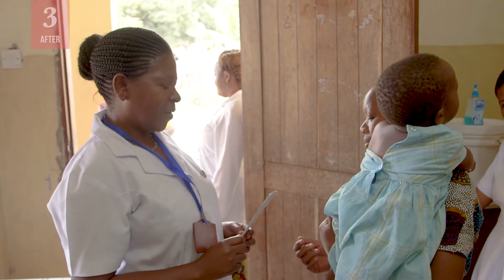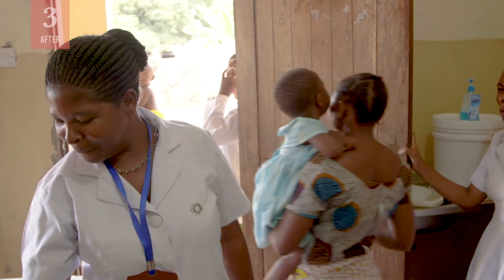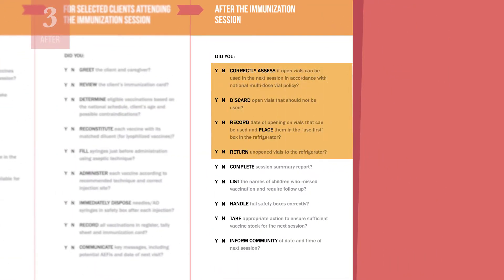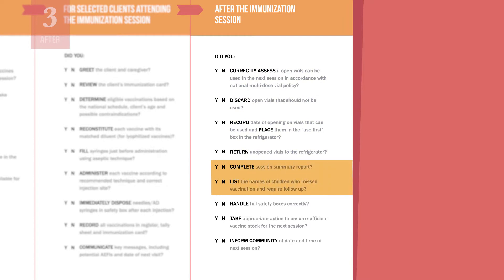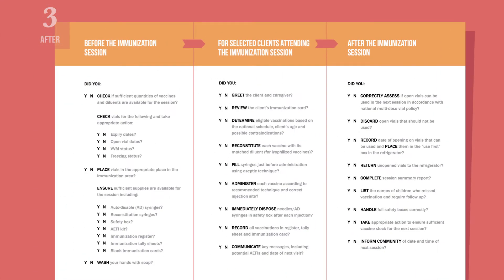Finally, the immunization session checklist can help you remember critical tasks after the immunization session. For example, it lists key points for handling open vials, recording important information from the session, including listing any defaulters, correctly disposing of safety boxes, and taking steps to prepare for the next session, such as checking stock and informing the community of the date and time of the next session. Finally, make sure you have copies of the checklist available for the next session.